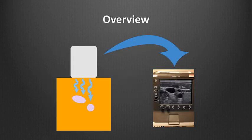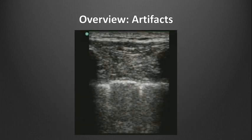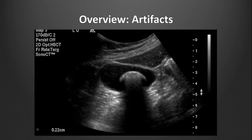Ultrasound artifacts are images that do not accurately depict the tissue being scanned. This includes images that are seen but are not present, tissue structures that are present which are not seen by ultrasound, or images showing tissues or structures with incorrect location and size. Some artifacts are normally present in tissues, such as comet tails, a type of reverberation artifact in a normal lung, while some artifacts are clues to the presence of pathology, such as shadowing from gallstones.